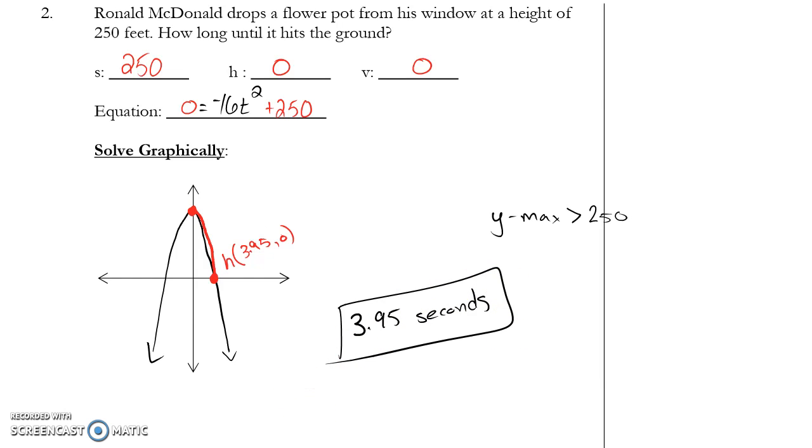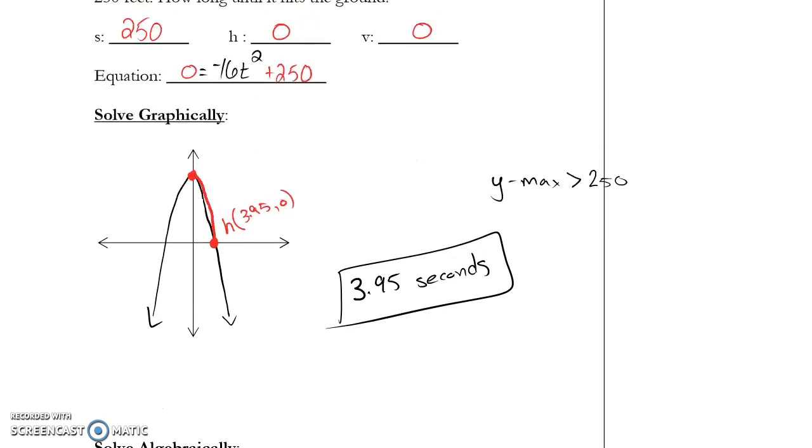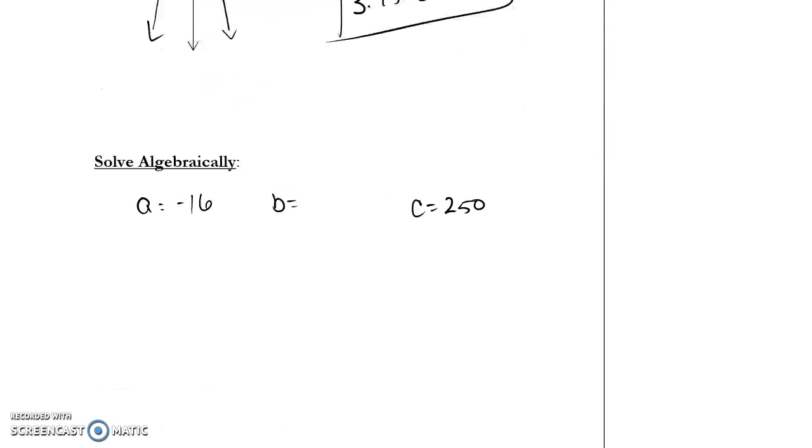See if you can verify that algebraically. In doing that, you need A, B, and C. What's B? Well, B is the same as your velocity. We don't have a velocity, so B equals 0. So when I'm using the quadratic equation here, the quadratic formula, I'm using 0 for B. Go ahead and check your solution algebraically here.